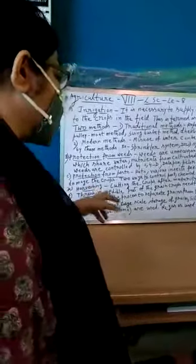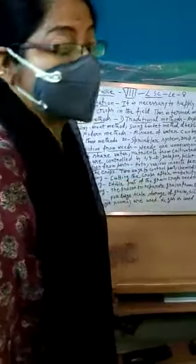In biological method, organisms are used to kill them. Next, harvesting - cutting the crops after maturity.